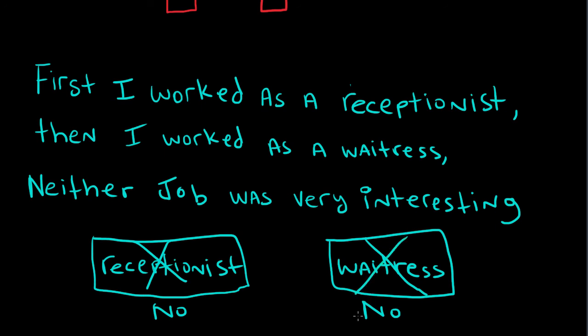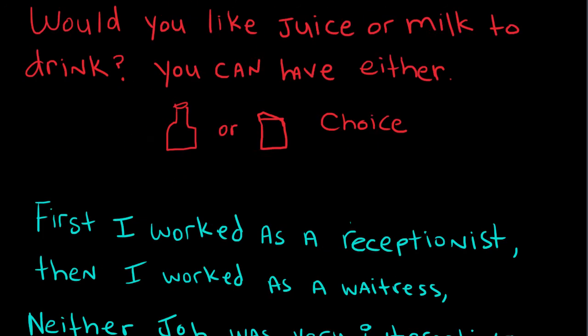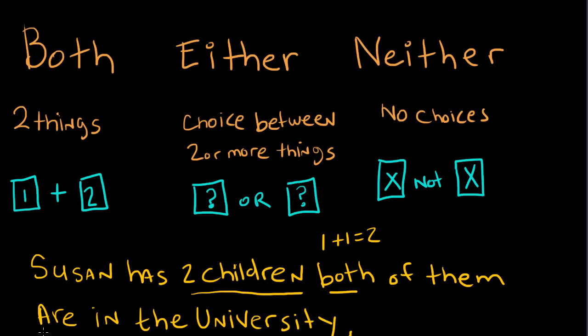So that's how we use both, either and neither. I hope this video has helped you understand how we use these words to talk about one or more things. Keep studying and good luck with your English.